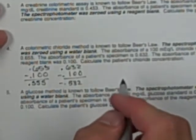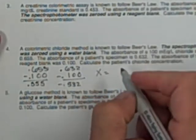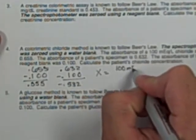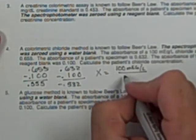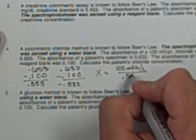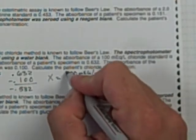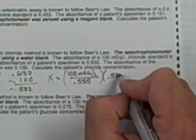Now I can use those absorbances in my formula. Concentration of my patient equals my 100 milliequivalent per liter standard over its absorbance, which is 0.555 once we've removed the reagent blank, multiplied by the absorbance of my patient, which is 0.532.